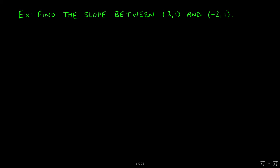Let's say we're asked to find the slope of the line between 3 comma 1 and negative 2 comma 1. We can start by assigning 3 comma 1 to be the first point and negative 2 comma 1 to be the second point.